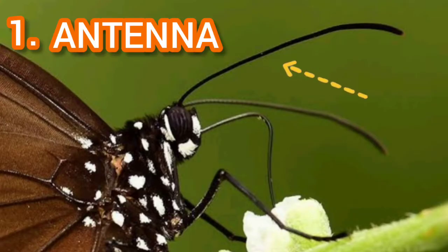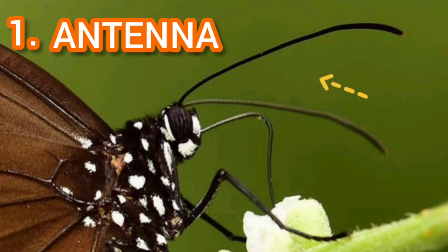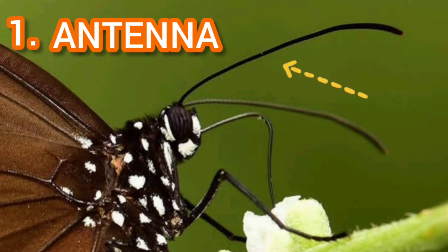The number one body part of the butterfly that we will look at is the antenna. Let's spell antenna: A-N-T-E-N-N-A. That's the two long tubes at the top of the head of the butterfly.